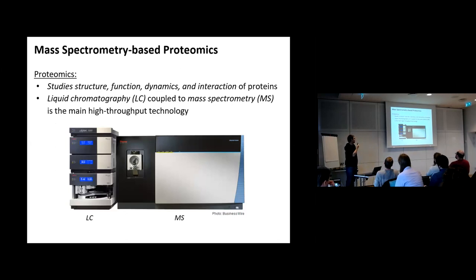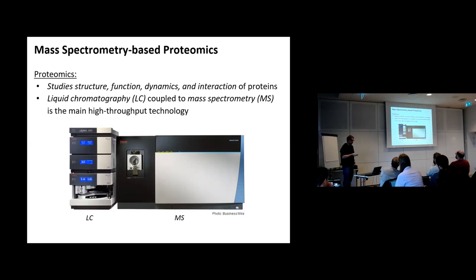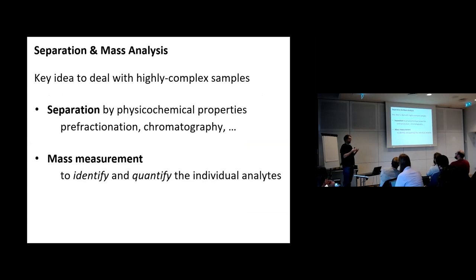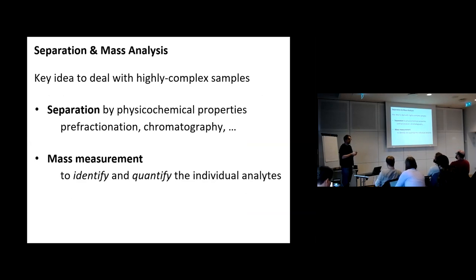In proteomics, we are generally interested in studying the structure, function, dynamics, and interaction of proteins in complex organisms. The main high-throughput technology we use is liquid chromatography coupled to mass spectrometry. The two key ideas are that we want to separate the analytes by their physicochemical properties using chromatography, and then measure the mass of the analytes to identify and quantify the individual analytes.